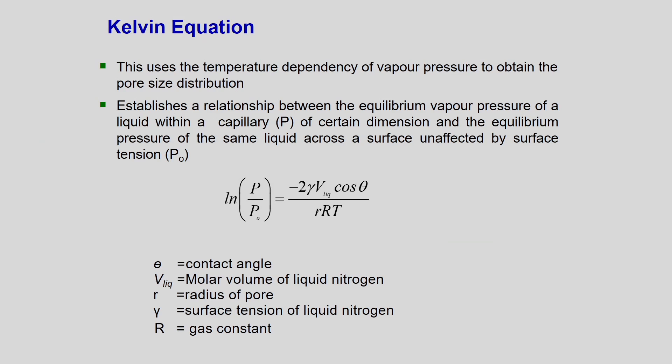An important concept to understand is the Kelvin equation, which has huge consequences at interfaces — whether gas-solid or solid-liquid. The Kelvin equation uses the temperature dependency of vapor pressure to obtain pore size distribution. It establishes a relationship between the equilibrium vapor pressure of a liquid within a capillary of a certain dimension and the equilibrium pressure of the same liquid across a surface unaffected by surface tension.